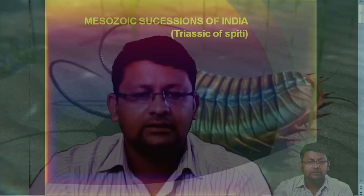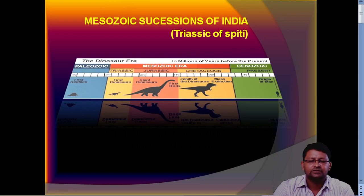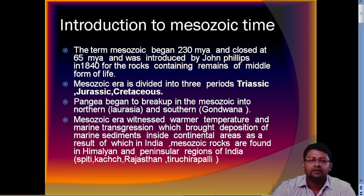Hello viewers, today we'll be talking about Mesozoic successions in India with special reference to the Triassic of Spiti. Welcome to my channel, Geology with Sarah. The Mesozoic time began 230 million years ago and closed at 65 million years ago. This term was introduced by John Phillip in 1840.